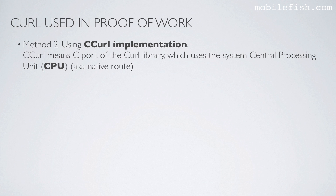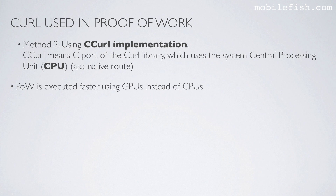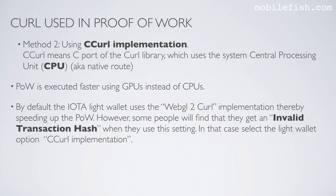Method 2: Using C curl implementation. C curl means the C port of the curl library which uses the system central processing unit, also known as the native route. Proof of work is executed faster using GPUs instead of CPUs. GPU stands for graphic processing unit; CPU stands for central processing unit. By default the IOTA light wallet uses the WebGL curl implementation, thereby speeding up the proof of work. However, some people will find that they get an invalid transaction hash when using this setting, in which case select the C curl implementation.